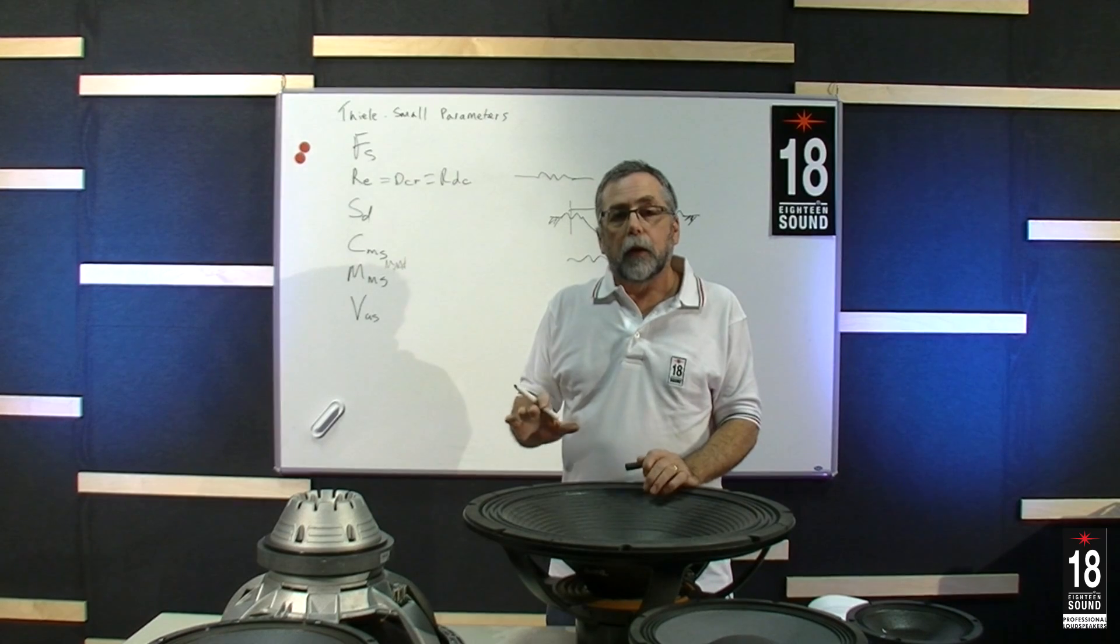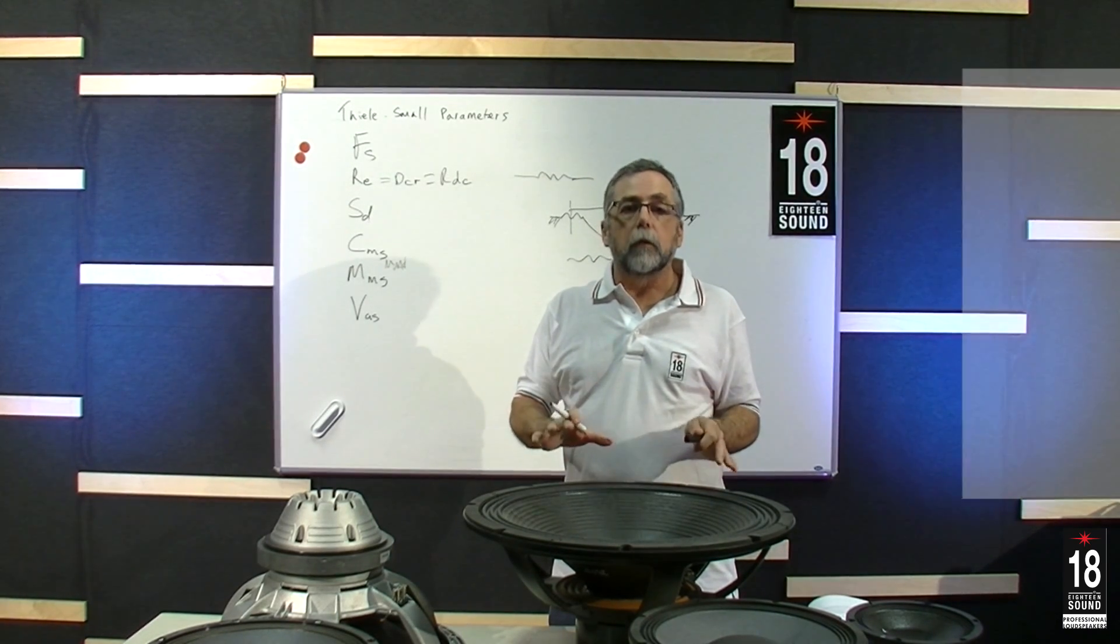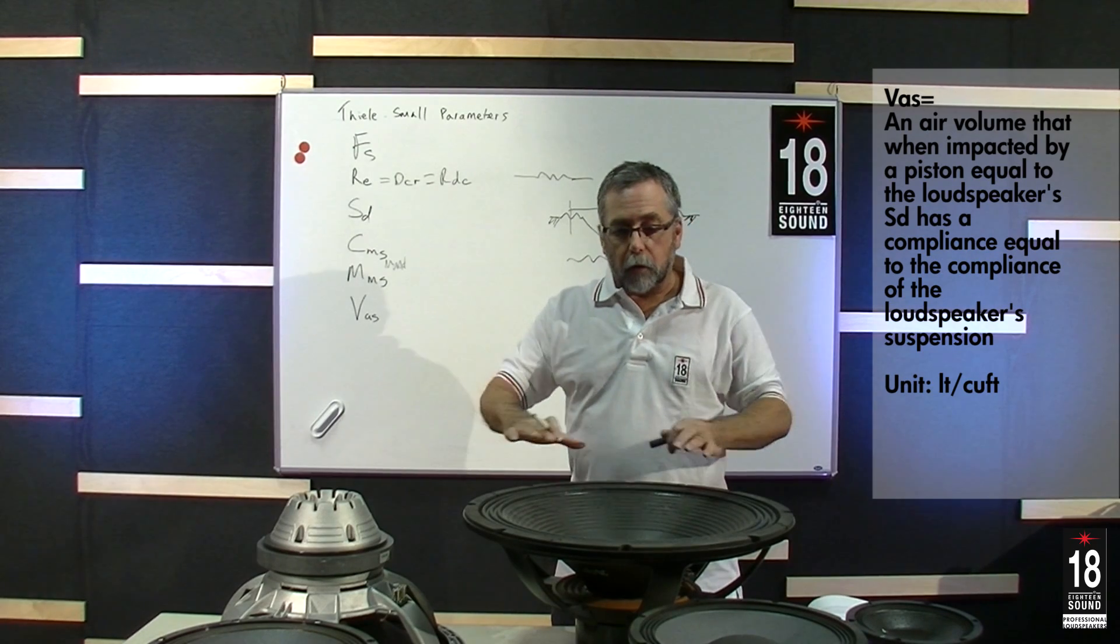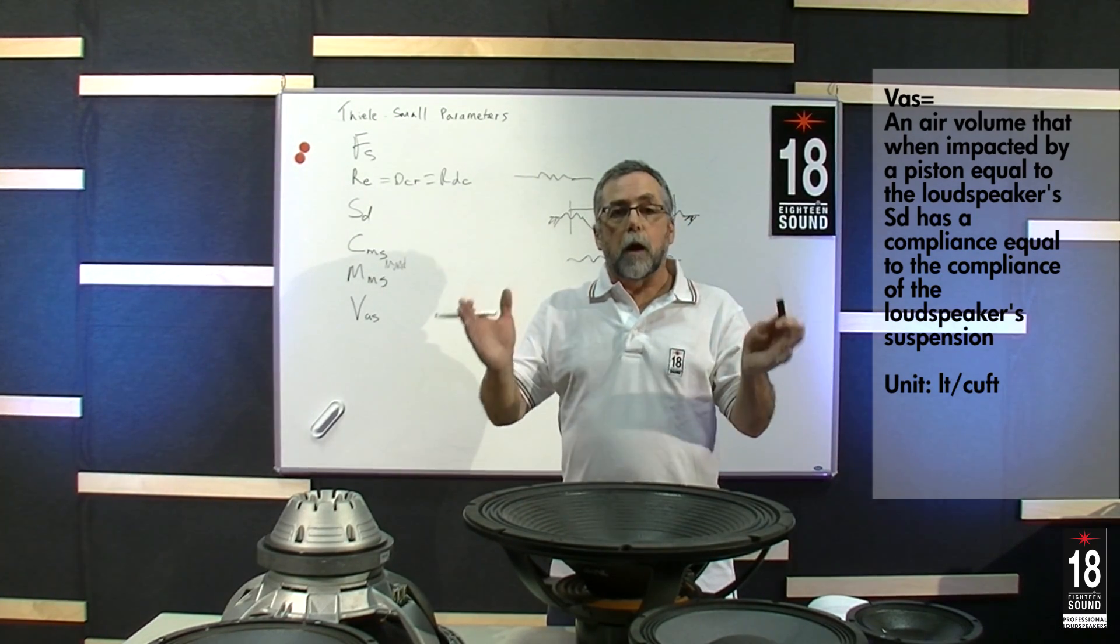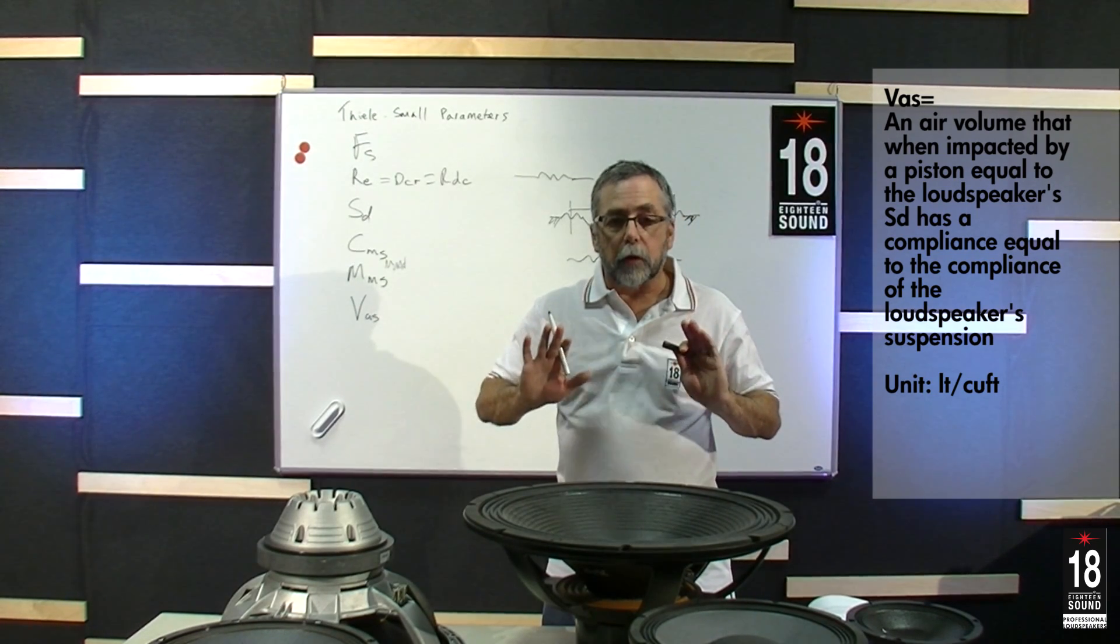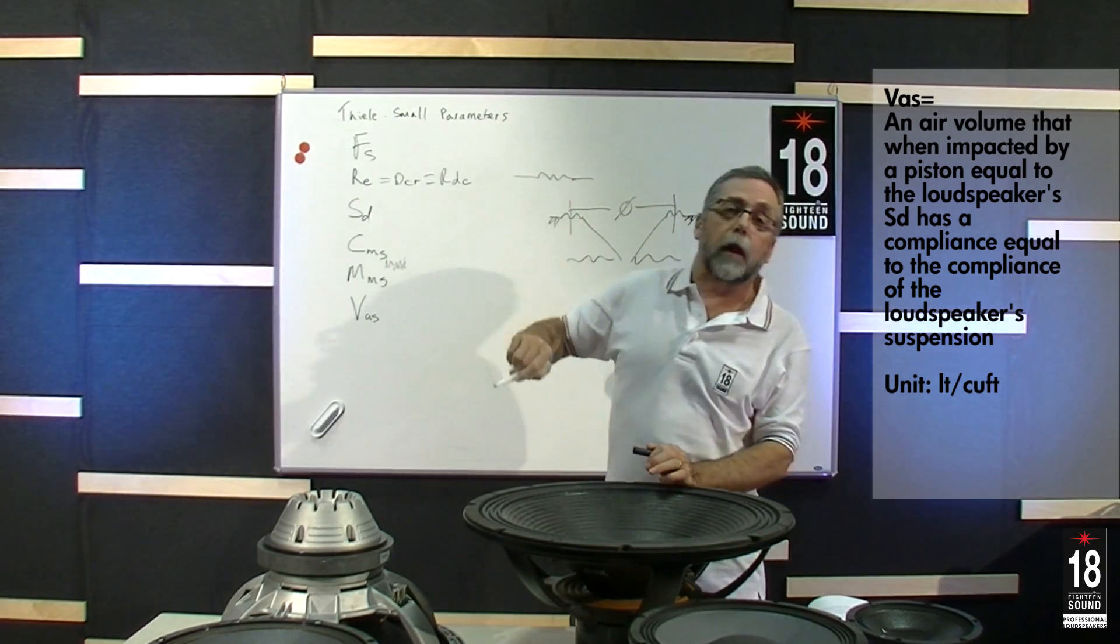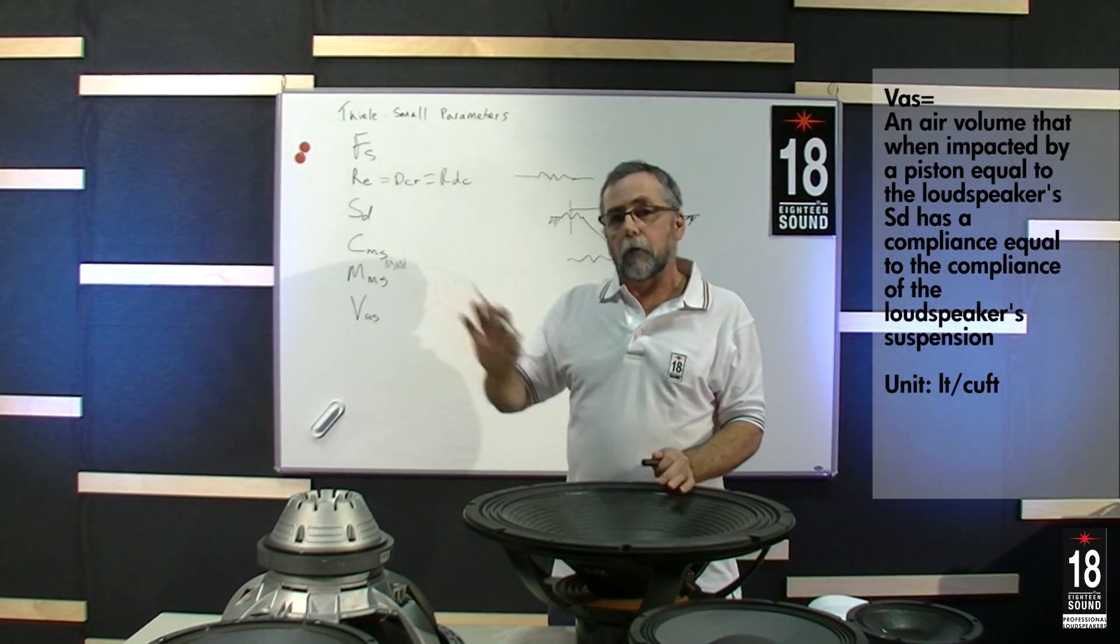Then VAS is known as the equivalent volume for the spring of the compliance. And this is made up, if you think of the air load on the surface of the cone, and if you made a box with this surface, and you had created a spring to push back, how much air, how much compression would equal the compliance of the moving parts of the loudspeaker. And we'll get into more details on these later on in other videos.